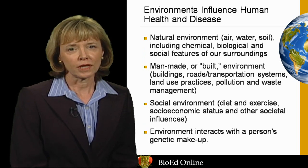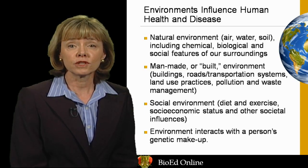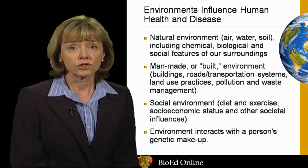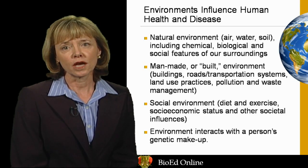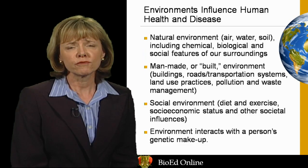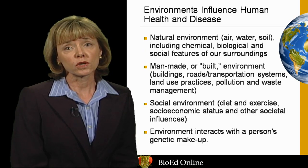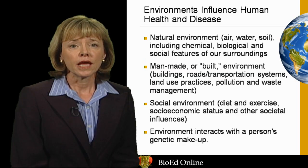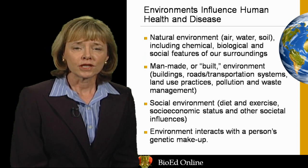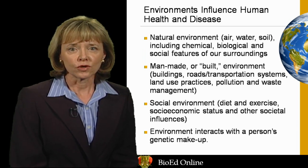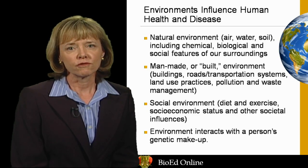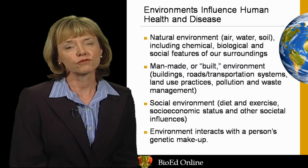But there's also a social aspect to environment. It consists of the things we eat and the way we live our lives — do we exercise? Our socioeconomic status has a huge role in the environment that surrounds us. And of course there are other influences of society: what do our friends do and what do our families do? The environment interacts with all aspects of a person's life. And a key part of this is also that each one of us is unique — depending on our own genetic makeup, the environment influences each one of us in a different way.